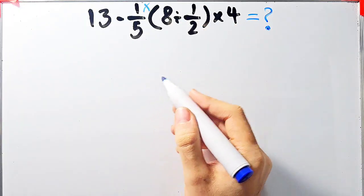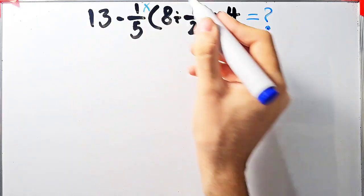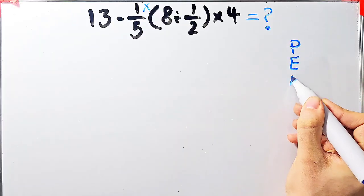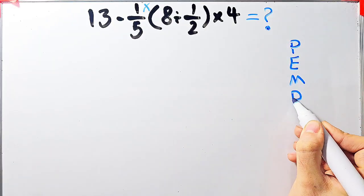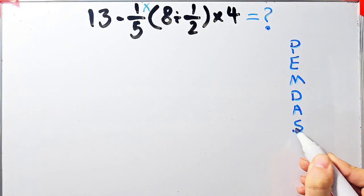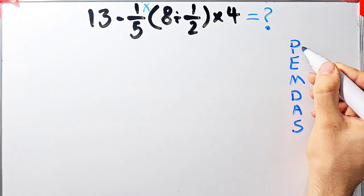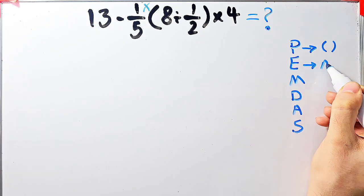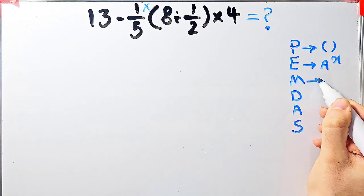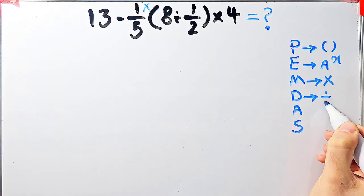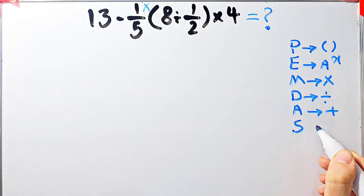To solve this question we need to follow the order of operations, which is PEMDAS. PEMDAS shows the priority of the mathematical operations, and if you don't pay attention to this rule you get the wrong answer. P stands for parentheses, E stands for exponent, M stands for multiplication, D stands for division, A stands for addition, and S stands for subtraction.